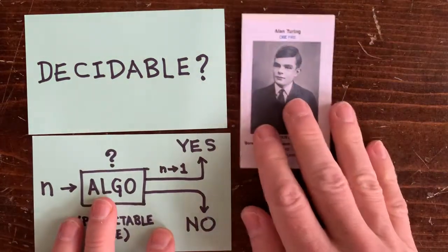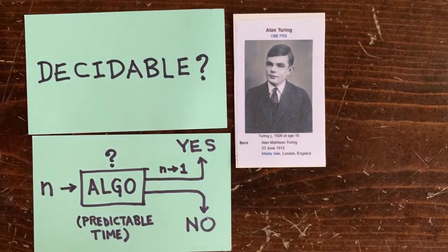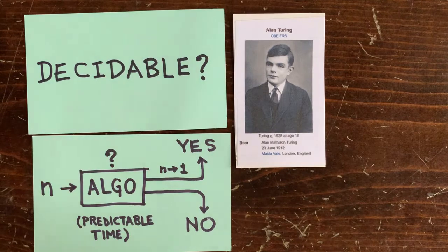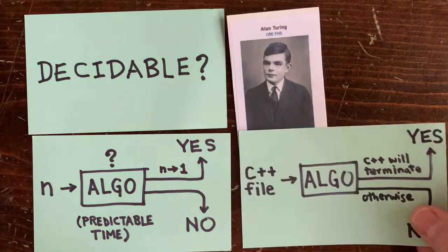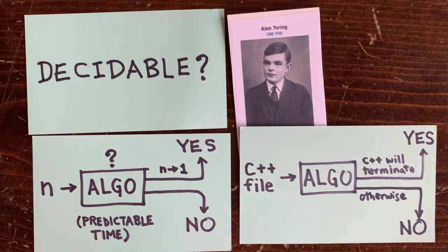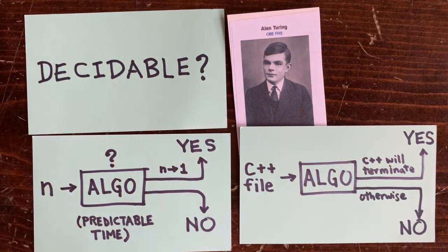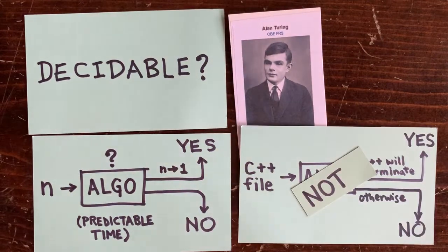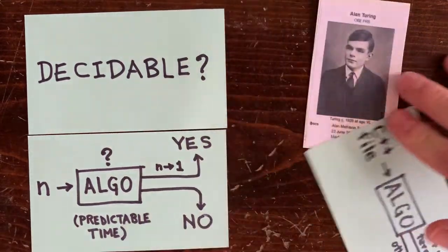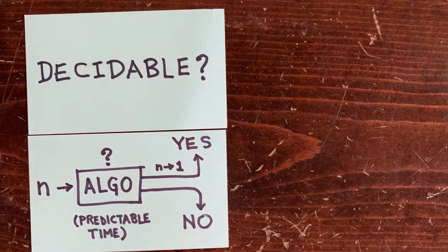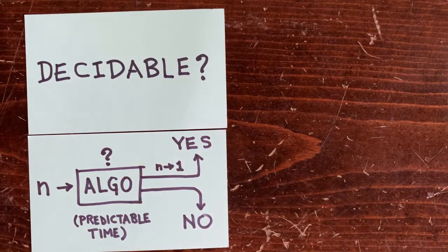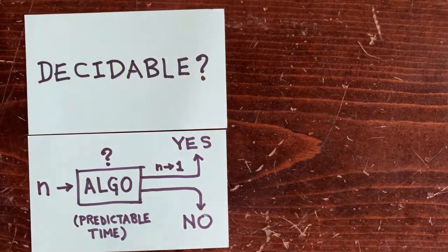Alan Turing showed that some problems aren't solvable by any algorithm and he wasn't just talking about romance. For example, can you write an algorithm that takes as input a file of C code and outputs whether that C code is going to terminate or not? No, there's no algorithm for that. So how about the 3N plus 1 decision problem? Actually nobody knows if it's decidable.